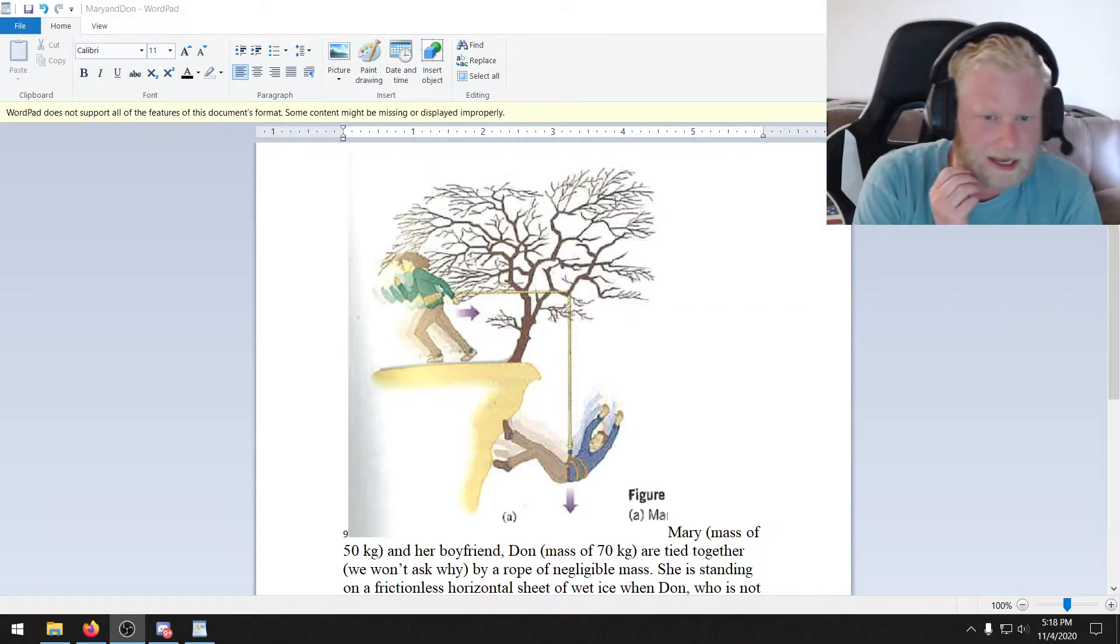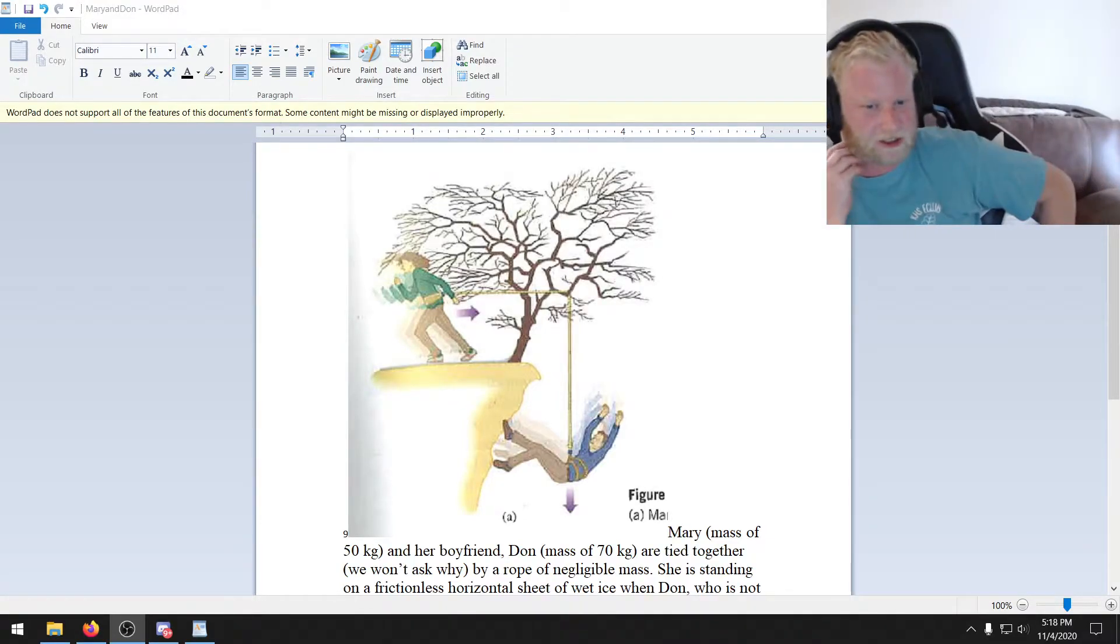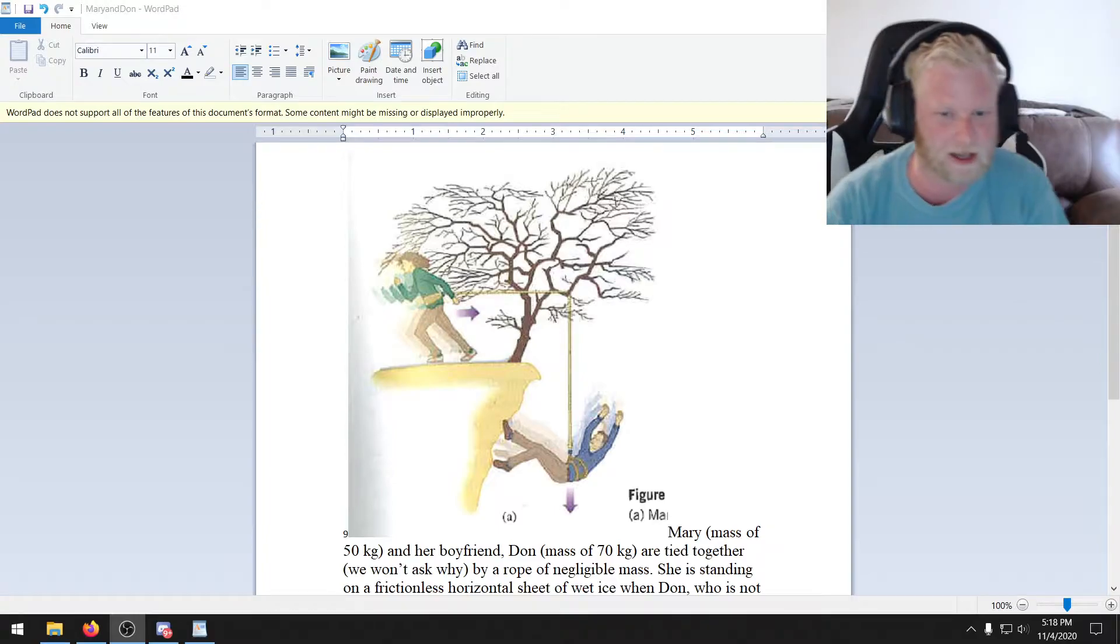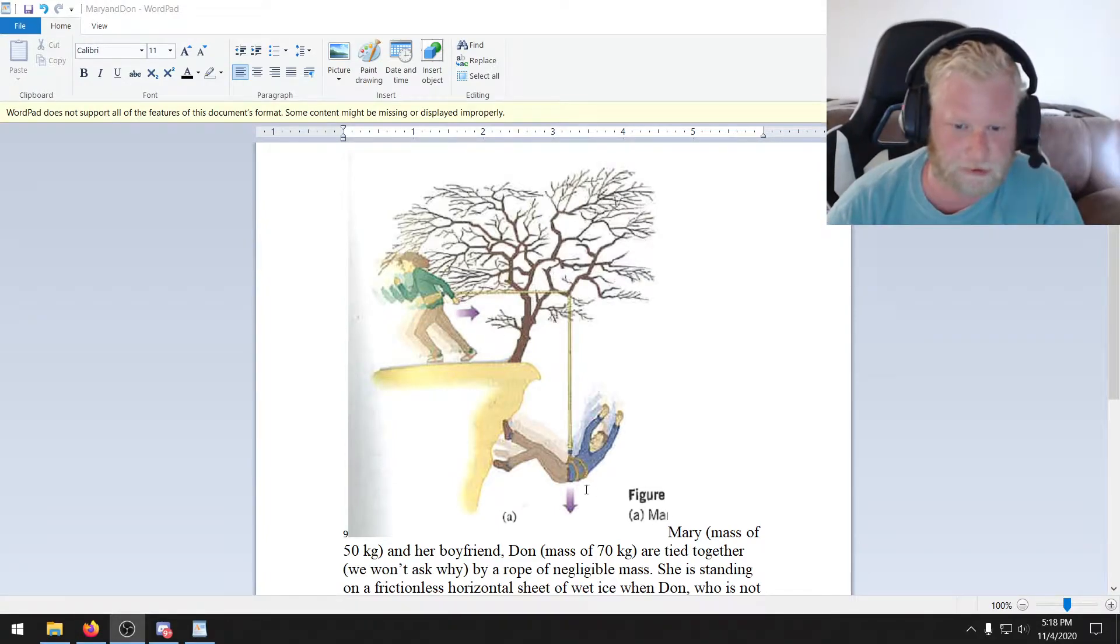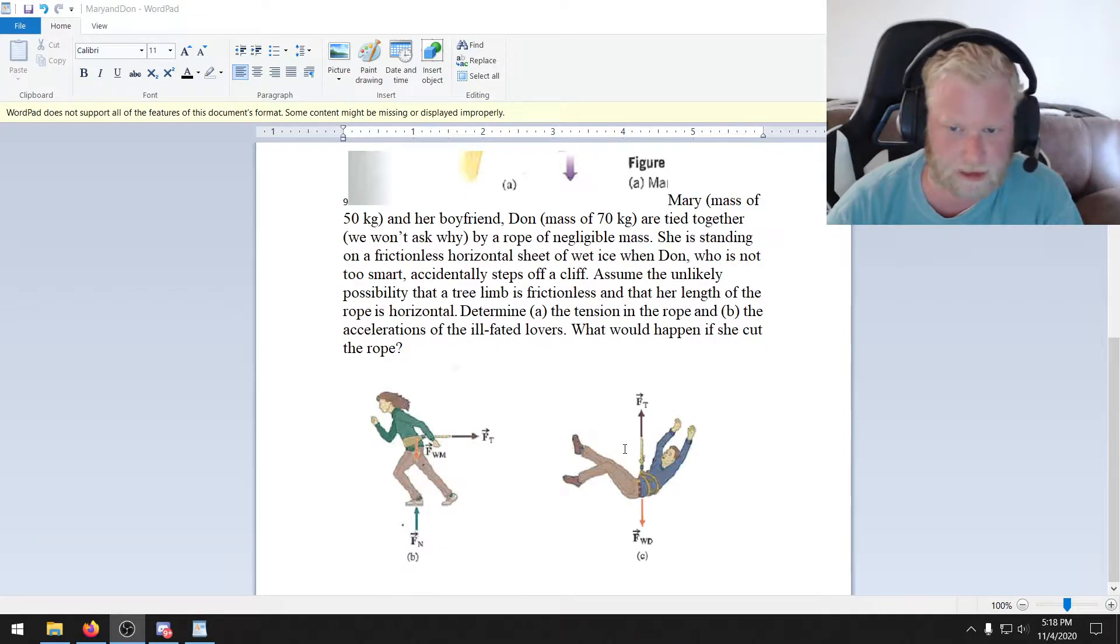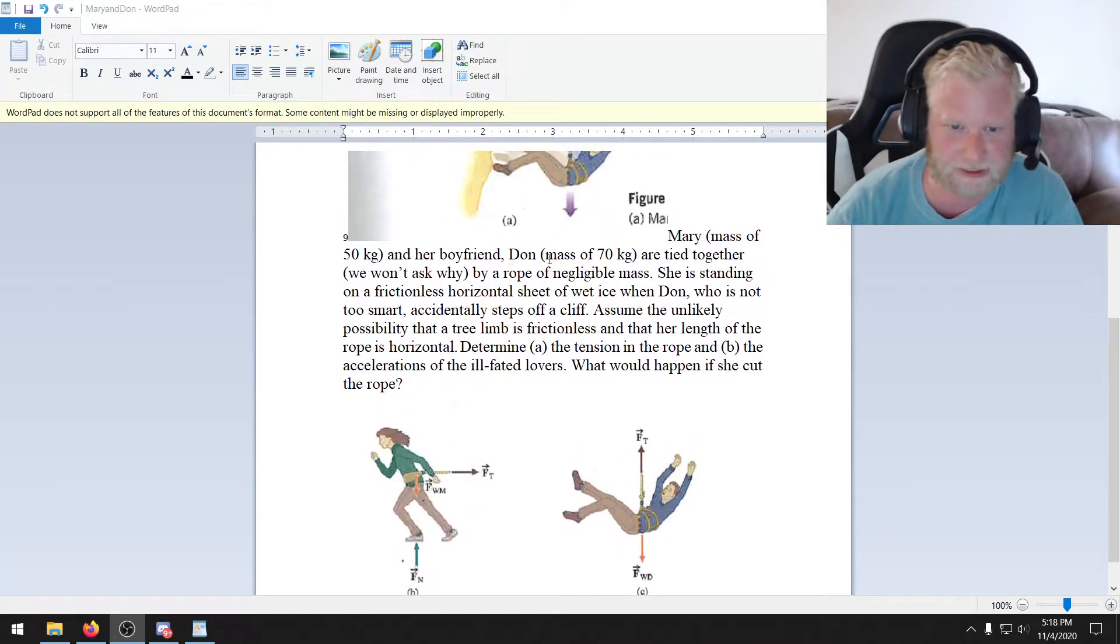All right, let's take a look at a more complex scenario where we've got objects that are interacting with each other. In this case, we've got two people joined together by a massless rope. We've got Mary, we've got Dawn. Mary has a mass of 50, Dawn's got a mass of 70. They're tied together.